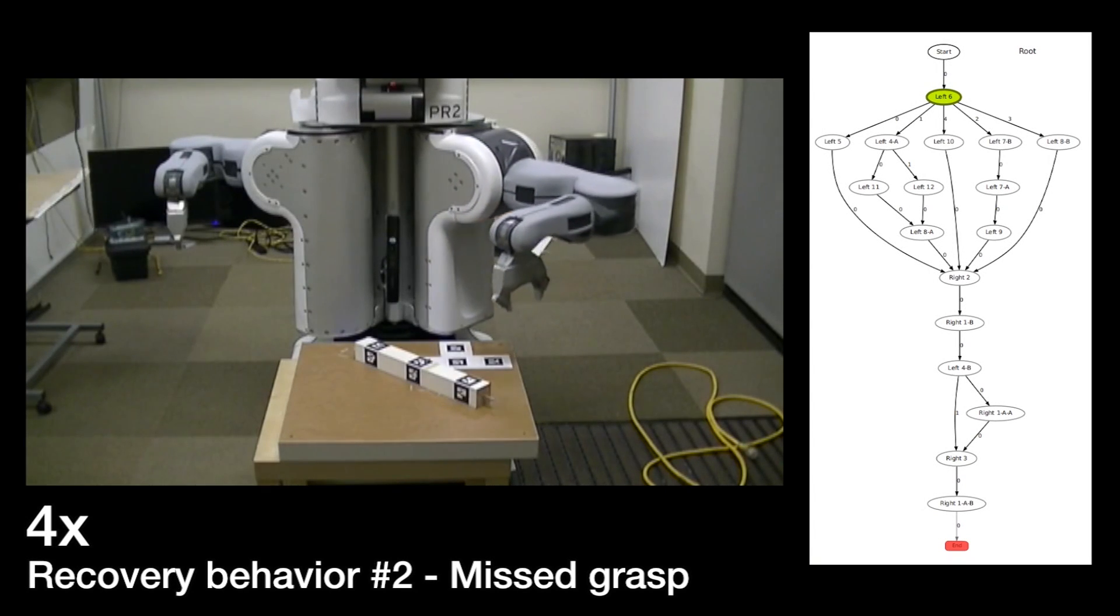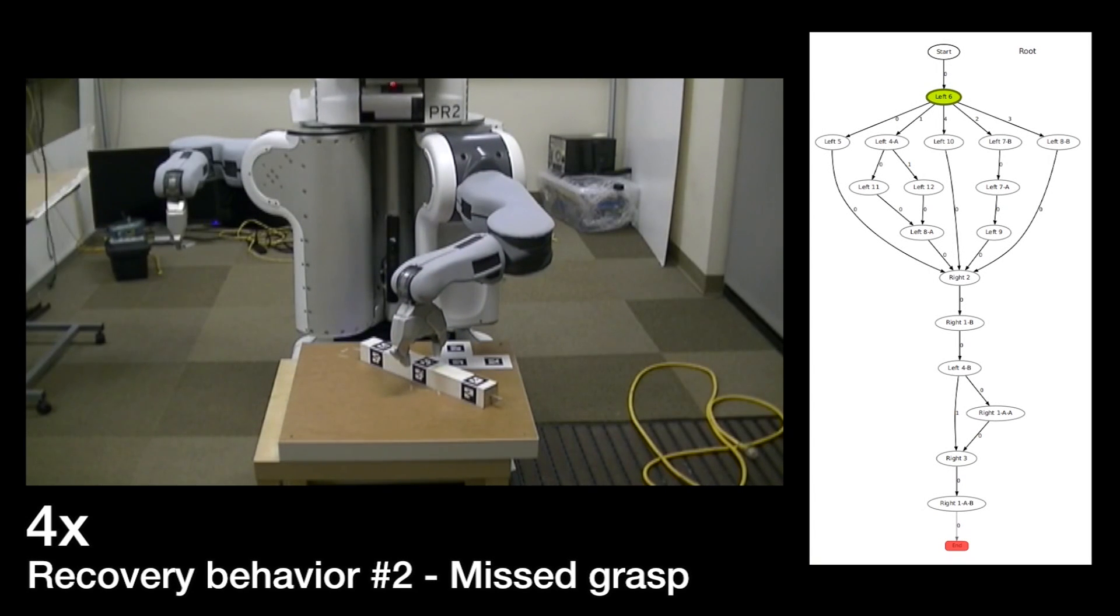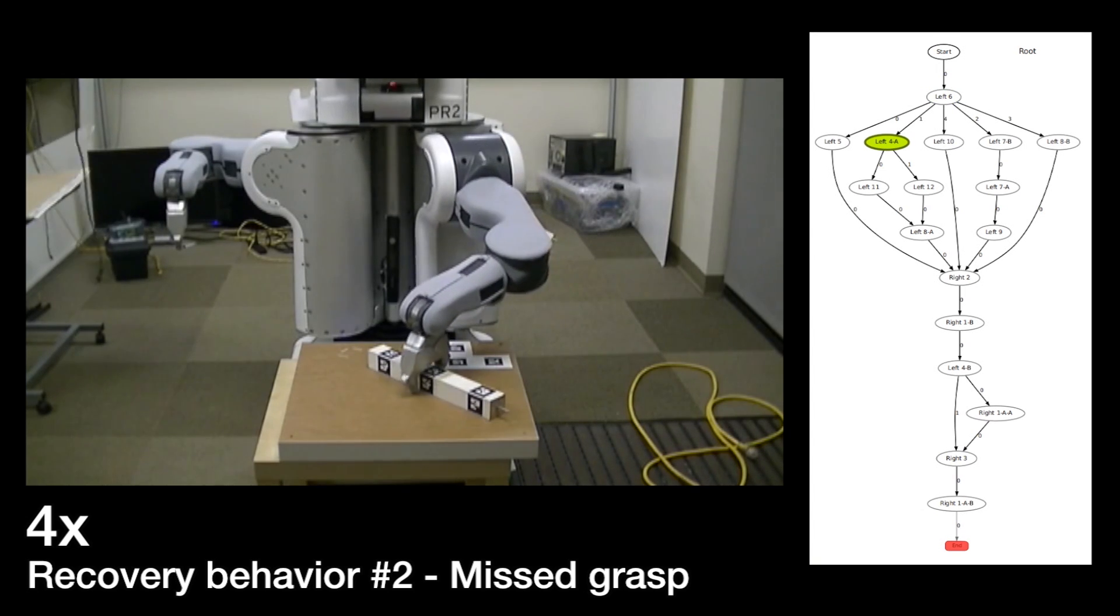Here, we see another recovery behavior, in which the robot recovers from a missed grasp, taking a different path than the finite state machine seen on the right.